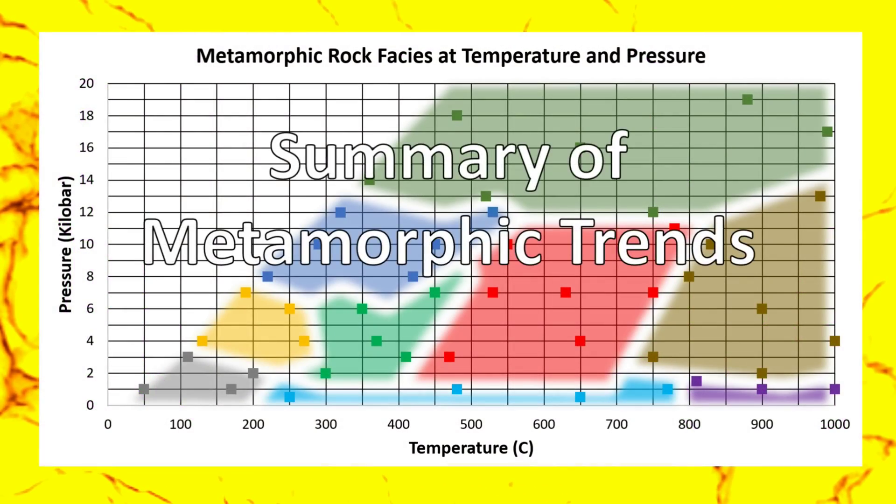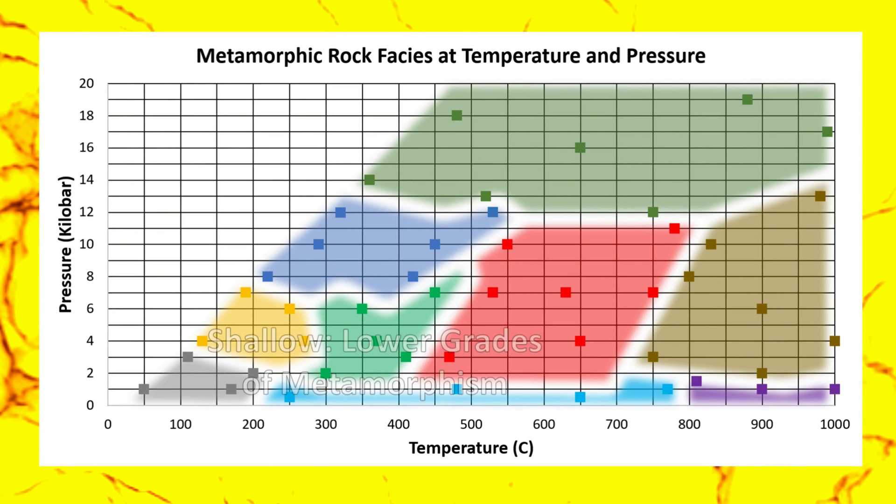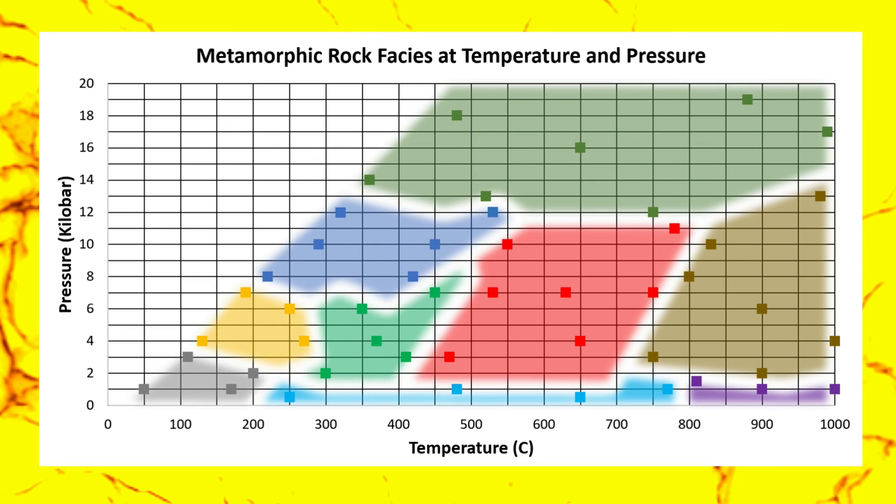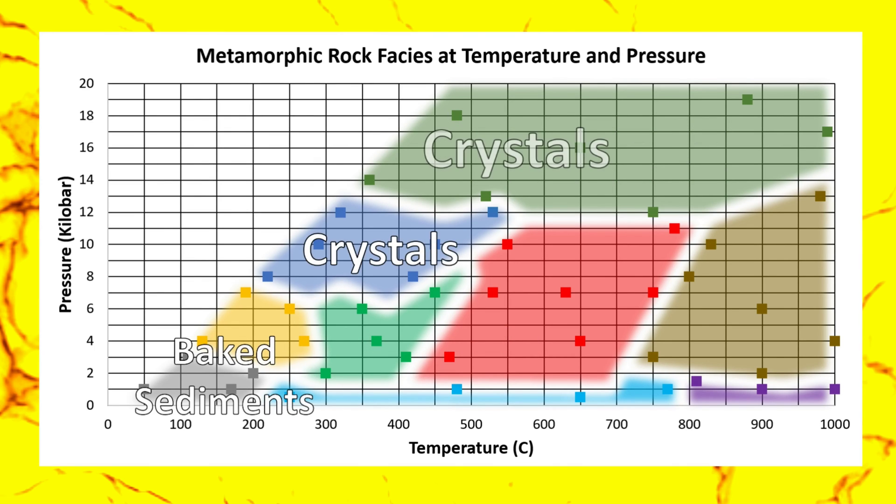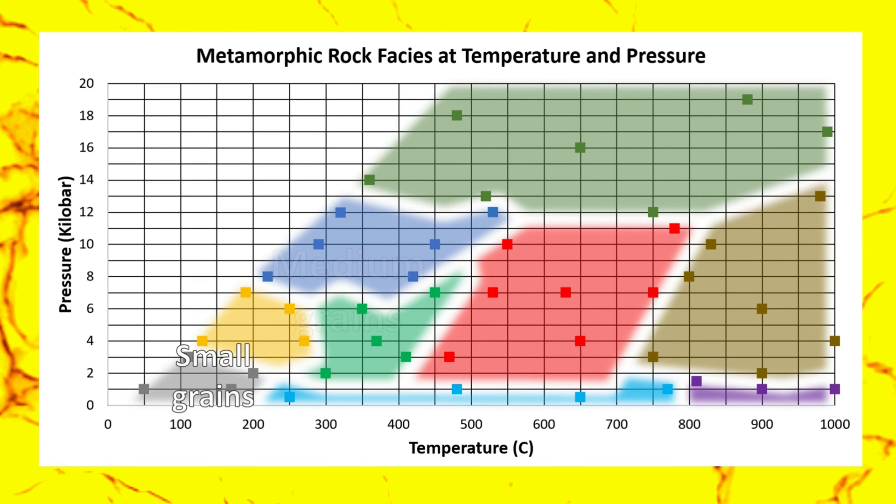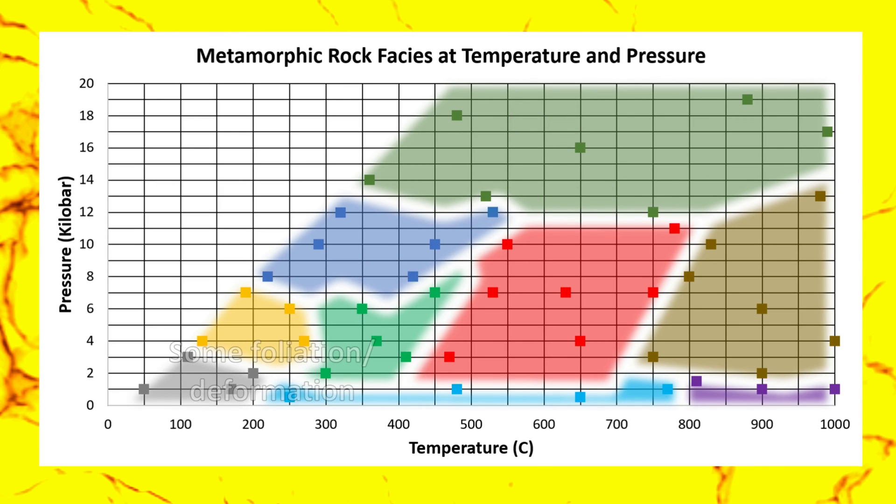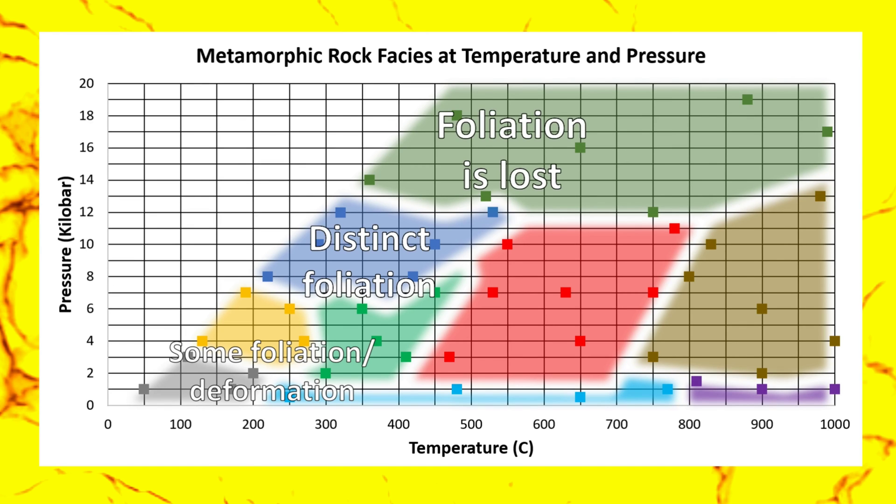Here's a summary of the metamorphic trends we find in this graph. Going deeper beneath Earth's surface gives us higher degrees of metamorphism. From low-grade to high-grade metamorphism, we find that a rock's grains go from baked sediments to crystals. We also find that the size of the grains increases as the grade of metamorphism increases. Finally, foliation increases from low-grade through mid-grade, but is usually lost at extremely high-grade metamorphic conditions.